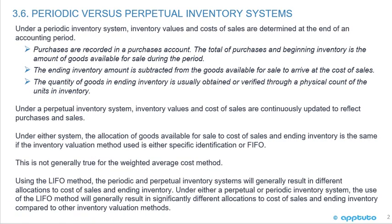Periodic vs. Perpetual Inventory Systems. Under a periodic inventory system, inventory values and costs of sales are determined at the end of an accounting period. Purchases are recorded in a purchases account. The total of purchases and beginning inventory is the amount of goods available for sale during the period. The ending inventory amount is subtracted from the goods available for sale to arrive at the cost of sales. The quantity of goods in ending inventory is usually obtained or verified through a physical count of the units in inventory.